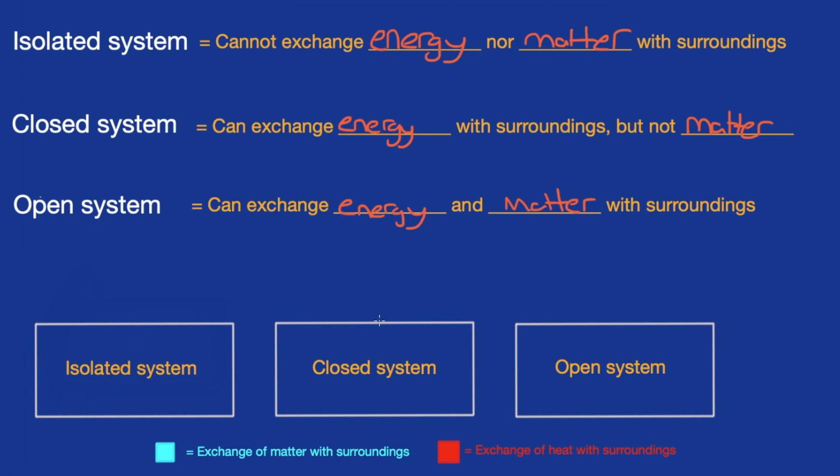Whereas for closed systems, like I mentioned, we're going to get exchange of energy or heat. So essentially, it's going to look like that between the system and the surroundings.